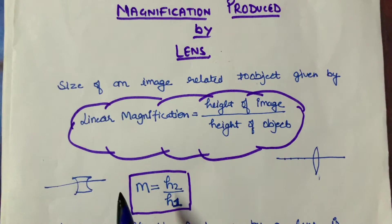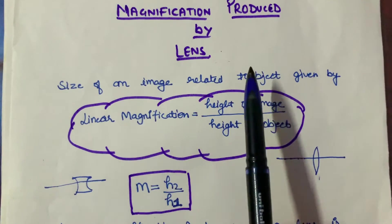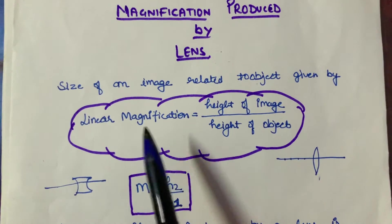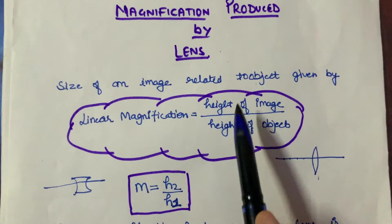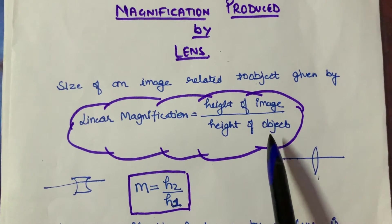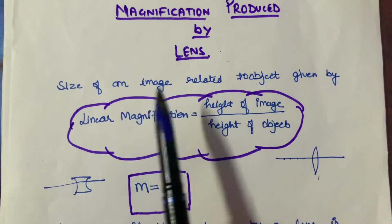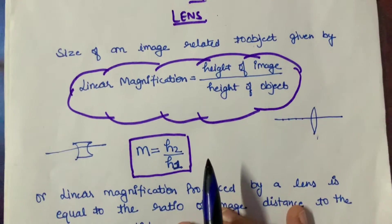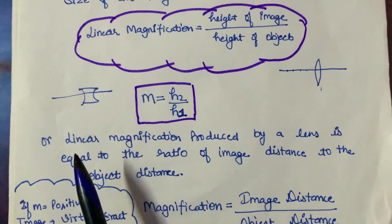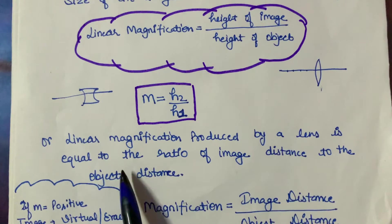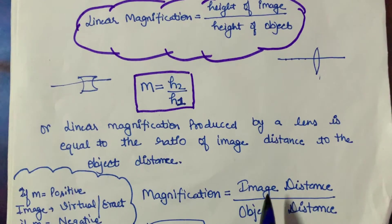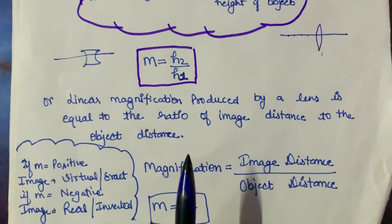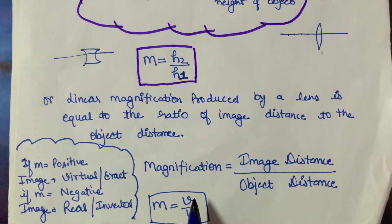Magnification means comparing and relating the size of the image to the size of the object — that is what we calculate using linear magnification. Linear magnification is equal to height of image upon height of object. So M equals H2 by H1. We have another definition as well: linear magnification produced by a lens is equal to the ratio of image distance to object distance. So M equals v by u, where v is image distance and u is object distance.